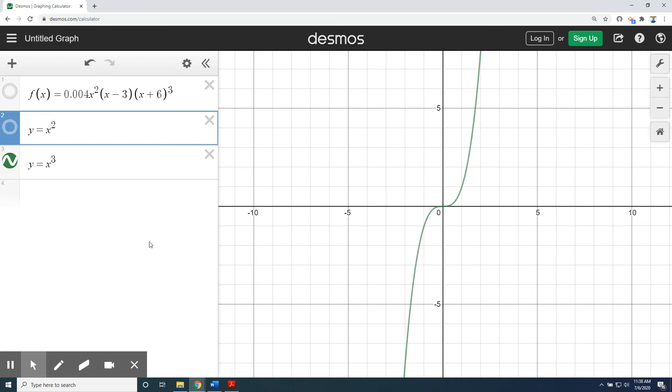In that same video series, we also discussed the cube function, which also has an x-intercept at 0, but this function crosses the x-axis and keeps going. Notice that the exponent on x³ is odd. So, even touches, odd crosses.